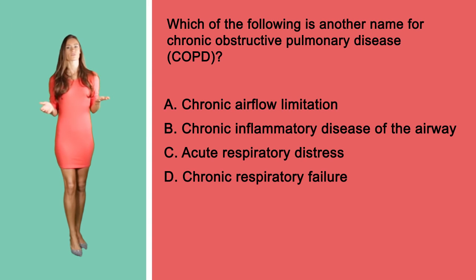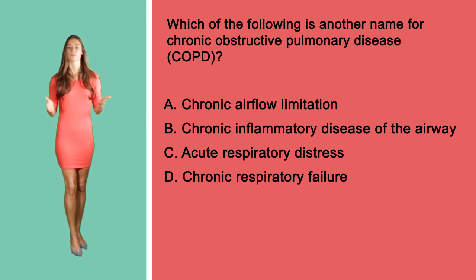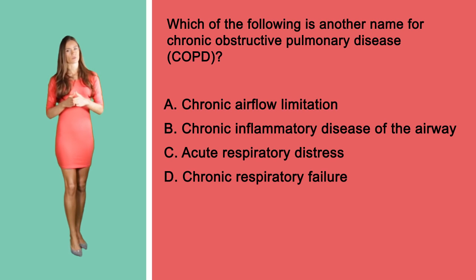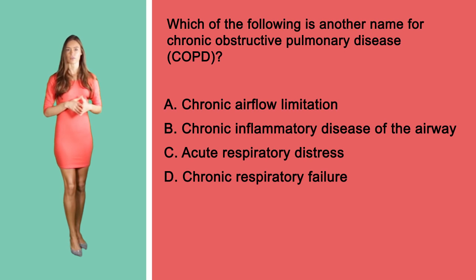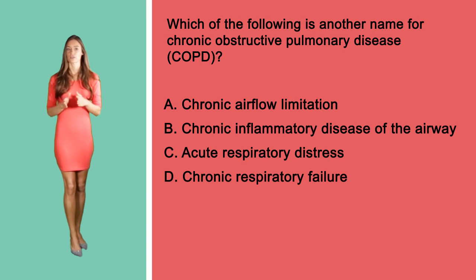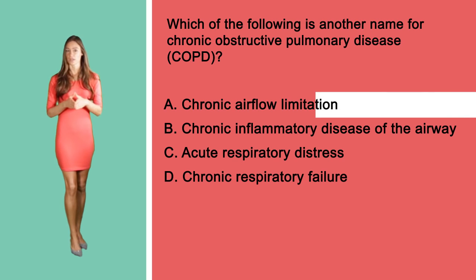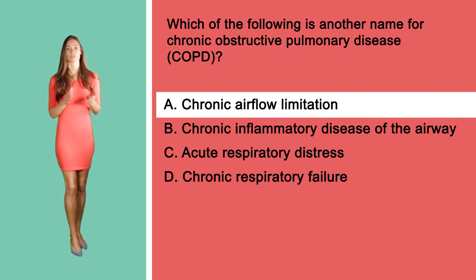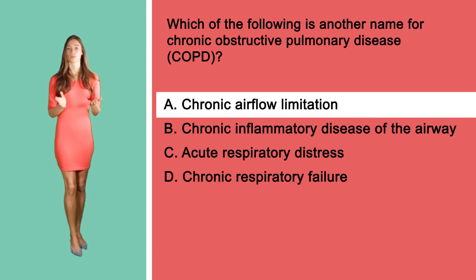So let's go over these answer options. Asthma is a form of chronic inflammatory disease of the airways, while acute respiratory distress syndrome is a form of respiratory failure that occurs from respiratory diseases. The correct answer here is option A. COPD is a chronic obstructive lung disease, also known as chronic airflow limitation.